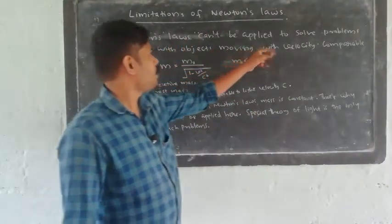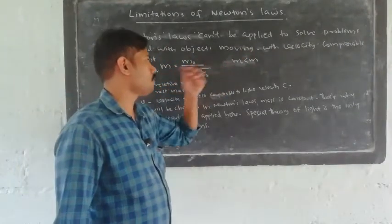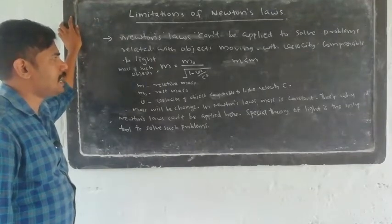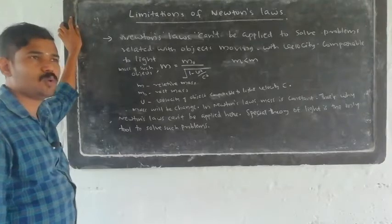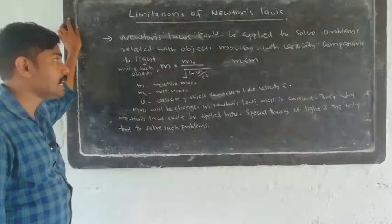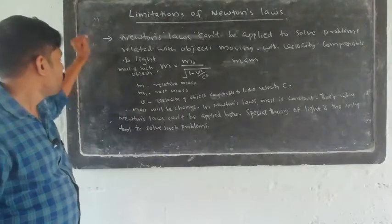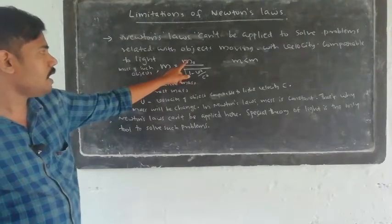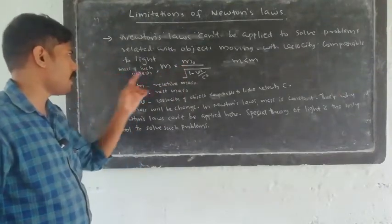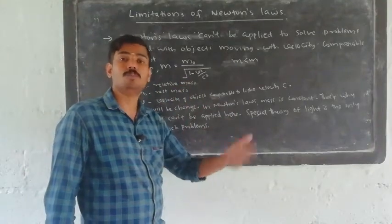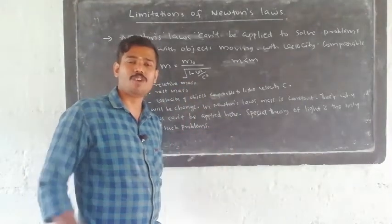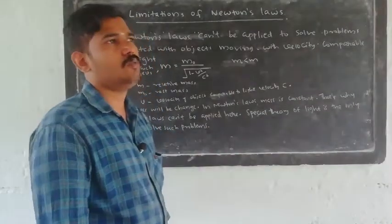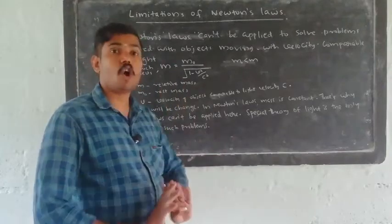Newton's Laws cannot be applied to solve problems related with objects moving with velocity comparable to light. For such objects moving with velocity comparable to light, mass is not constant.